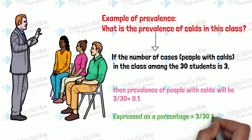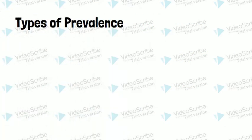Types of prevalence: Prevalence can be divided into two—point prevalence and period prevalence. PP denotes period prevalence.